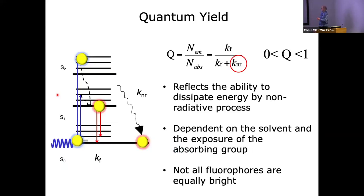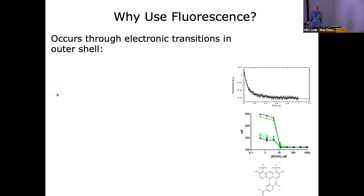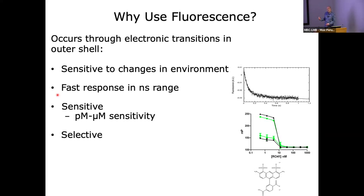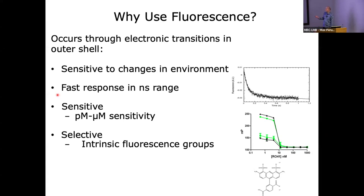To describe how good the fluorescence is, we talk about quantum yields - that's really a ratio of how many photons are emitted compared to those that you absorb. That depends upon both the rate of fluorescence and the rate of non-radiative transfer, which reflects dissipation to heat and other processes to the solvent. So not all fluorophores are equally bright. Why use fluorescence? It's very sensitive to changes in the environment, it's fast at the nanosecond time frame, it's very sensitive down to picomolar, it's very selective, you can use intrinsic groups like tryptophan and tyrosine, and it's also very reproducible.